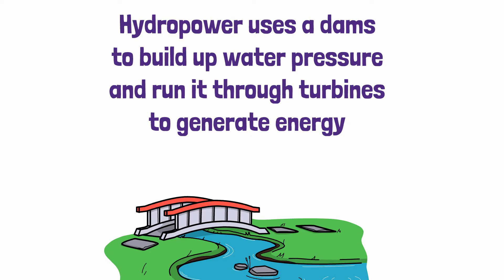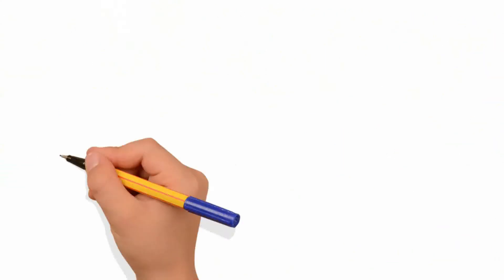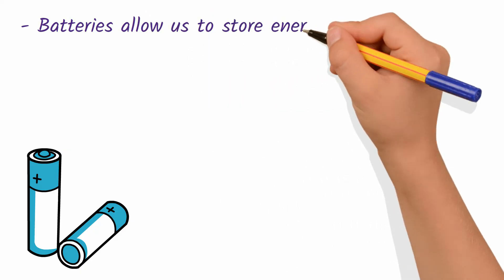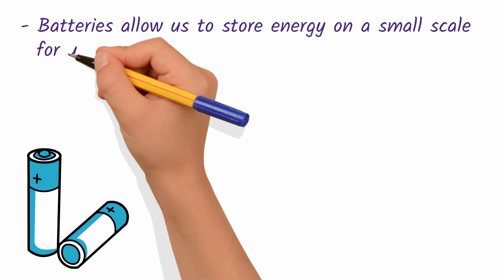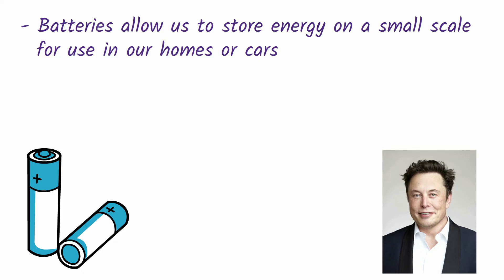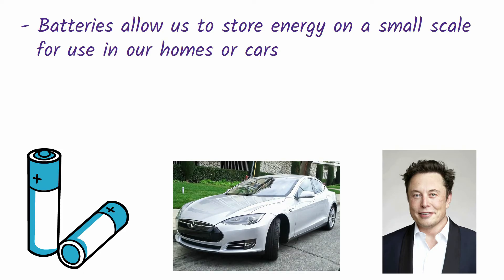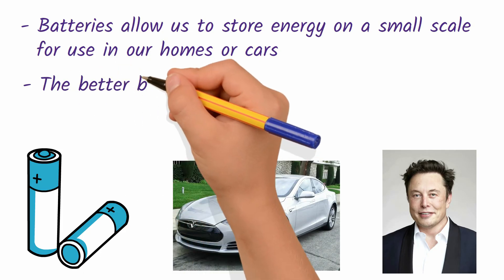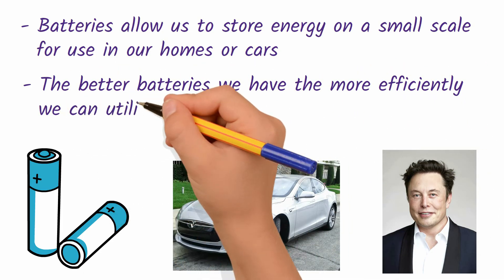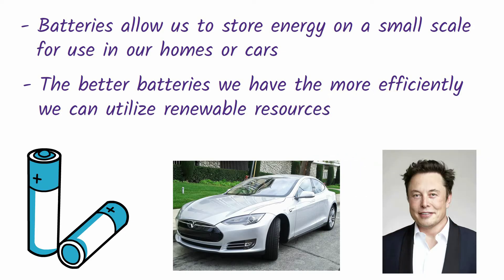Another big component of renewable energy are batteries. Batteries allow us to store energy on a small scale for use in our homes or cars. And this is how Elon Musk's Tesla cars work. The better batteries we have, the more efficiently we can utilize renewable resources.